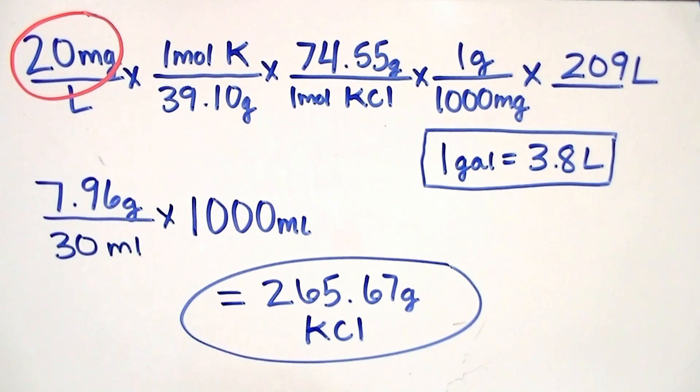The next number that's subject to change is the volume of the aquarium you're dosing. To find out how many liters your aquarium is simply take the volume in gallons and multiply it by 3.8.